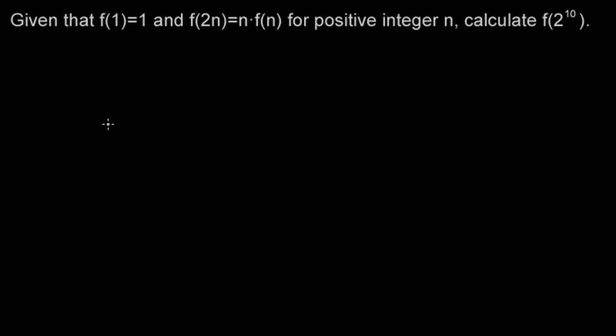Given that f(1) equals 1 and f(2n) equals n times f(n) for positive integer n, calculate f(2^10).